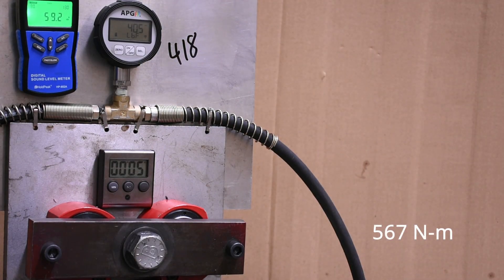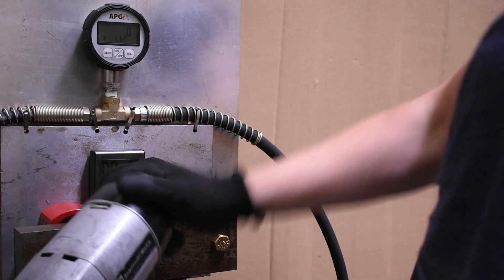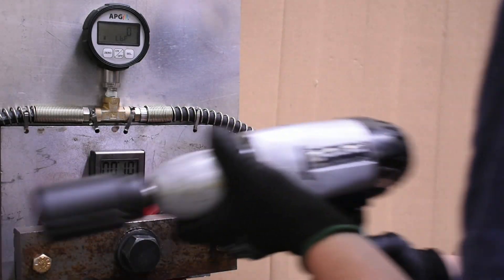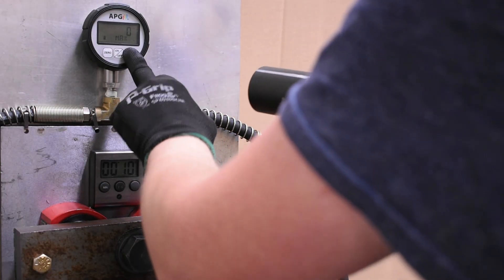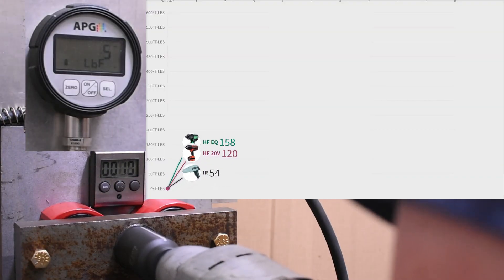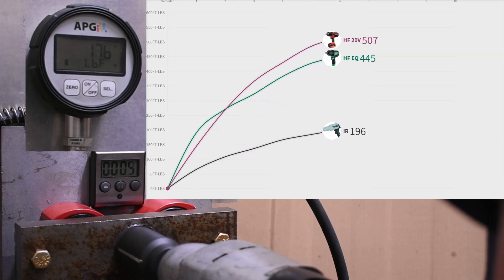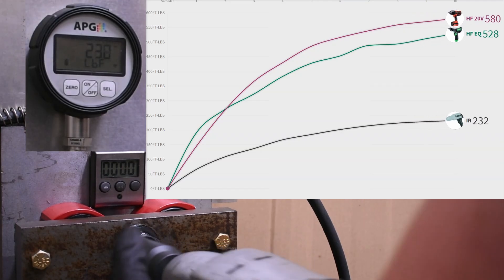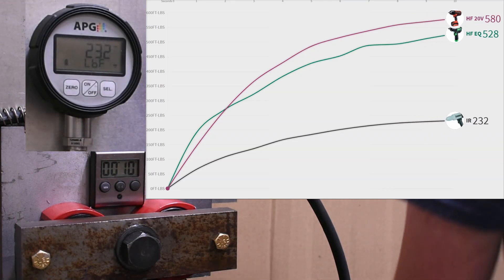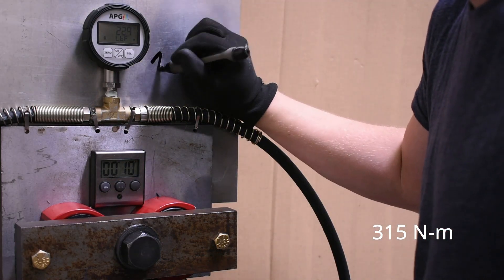Our next test is called Max Torque. This is 10 seconds in reverse. Here's how the old-school IR stacks up. To change to reverse on this tool, the whole back housing sort of clocks into a different position. It took us a minute to figure that out. Yeah, so the IR does not like reverse. It made less in this 10-second test than it did in the 5-second forward test.